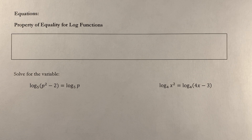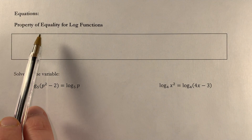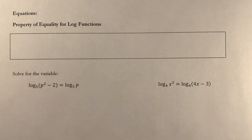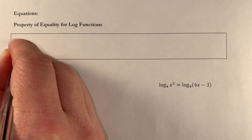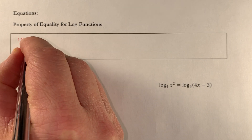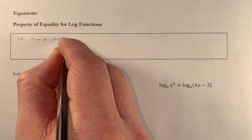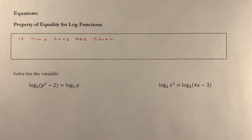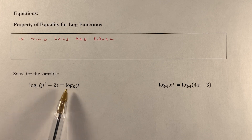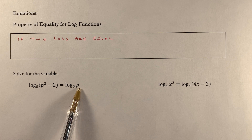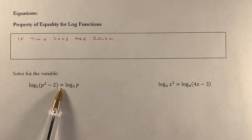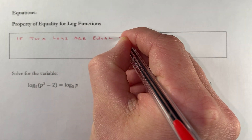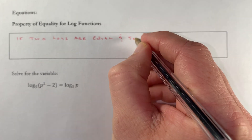Today we are going to solve some equations involving logarithms, starting with the property of equality for log functions. That property says if two logs are equal — meaning there's a log on one side and a log on the other, like log base 5 of p squared minus 2 equals log base 5 of p — they are equal because there's an equal sign between them, and they have equal bases.